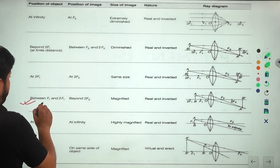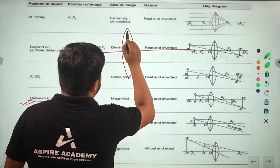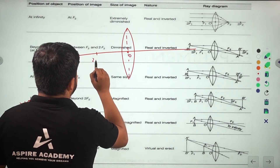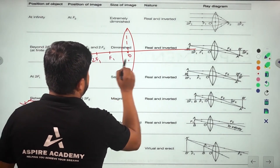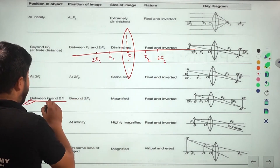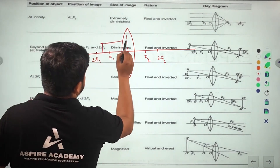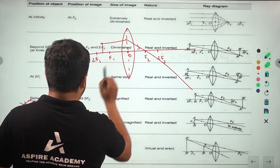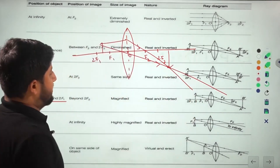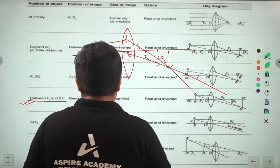Next case: when the object is placed between f1 and twice f1 in a convex lens. After refraction, the ray goes toward f1, and the two rays of light meet beyond twice f2 on the other side. The image will form beyond twice f2.